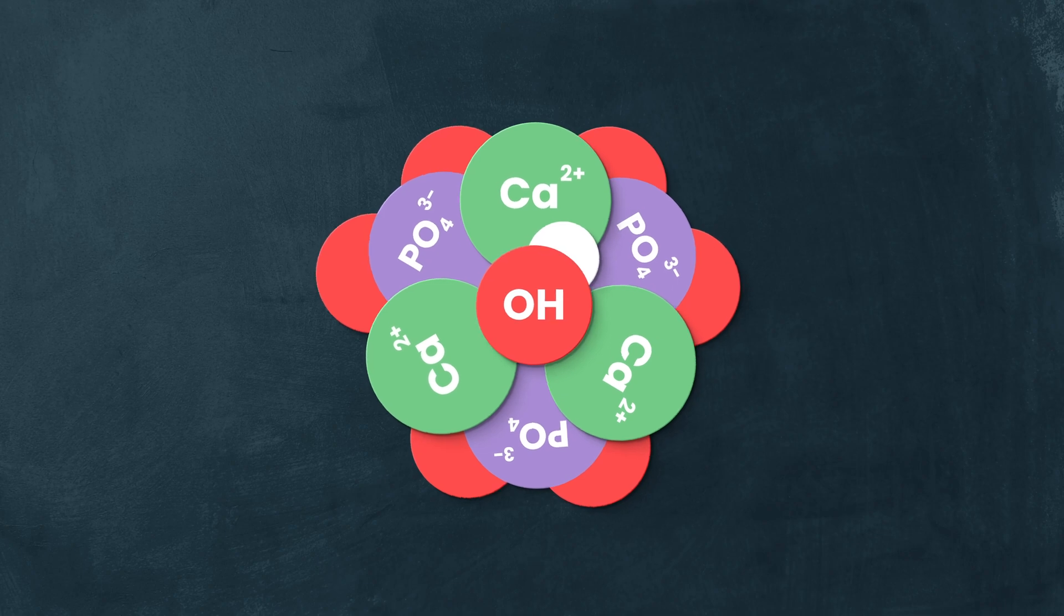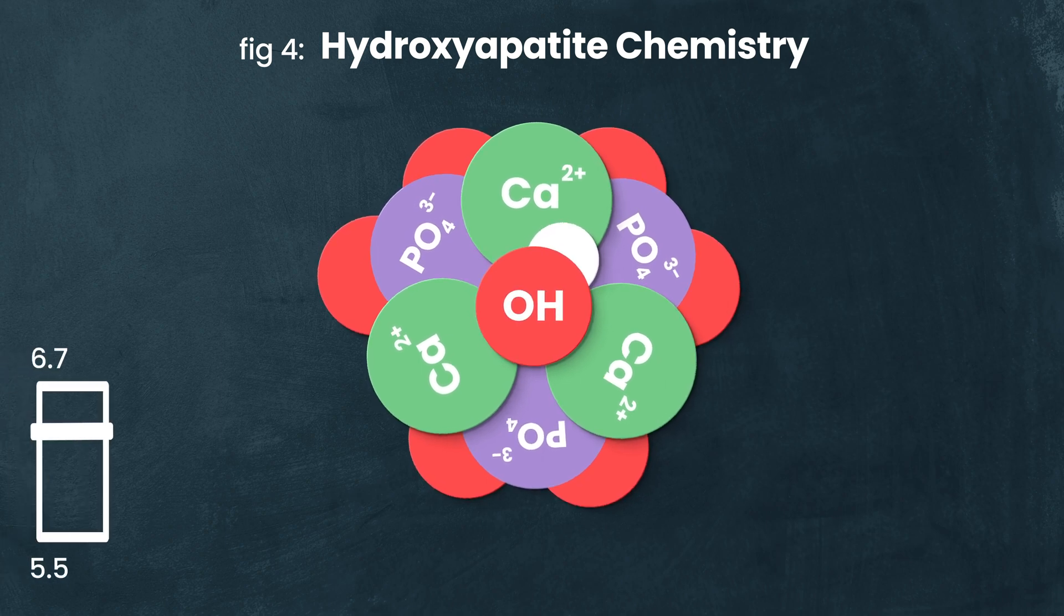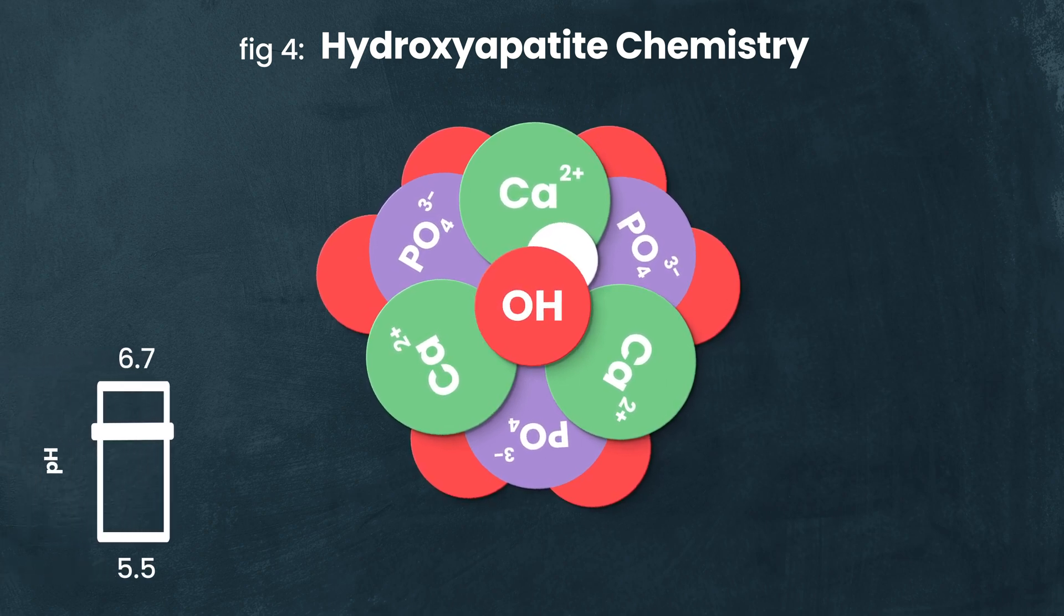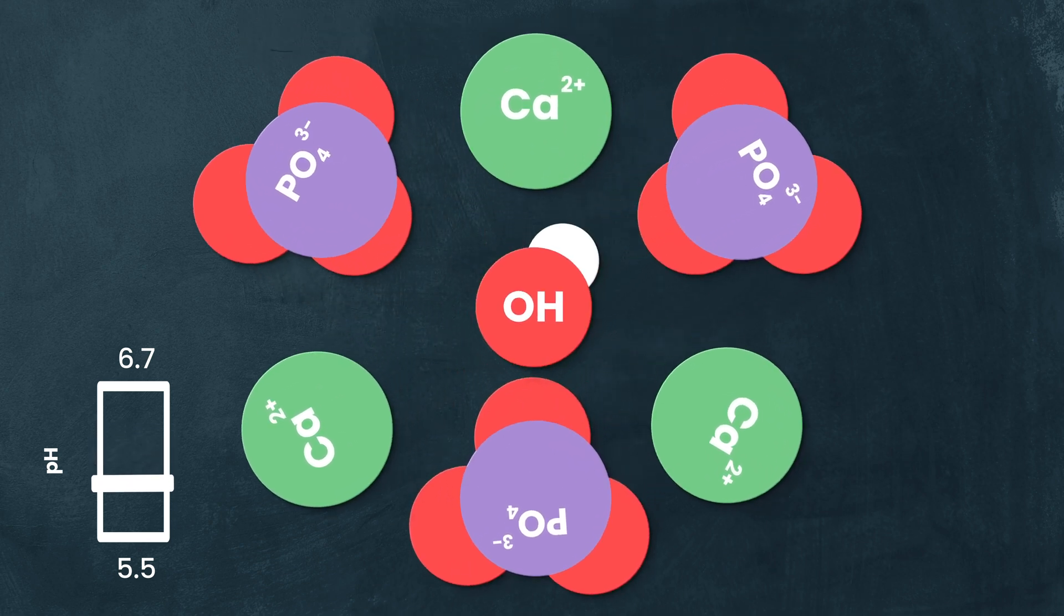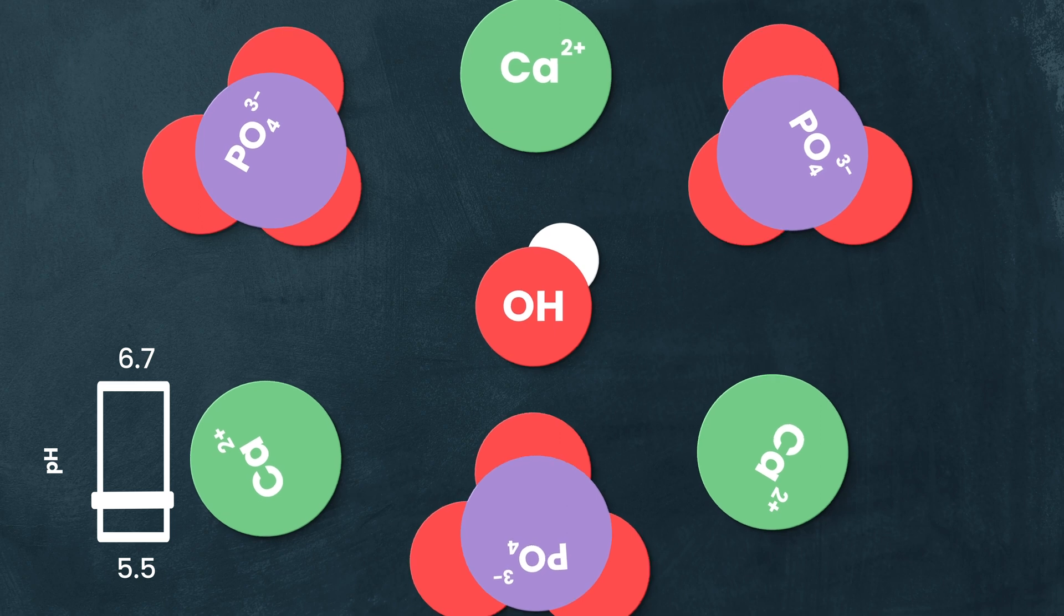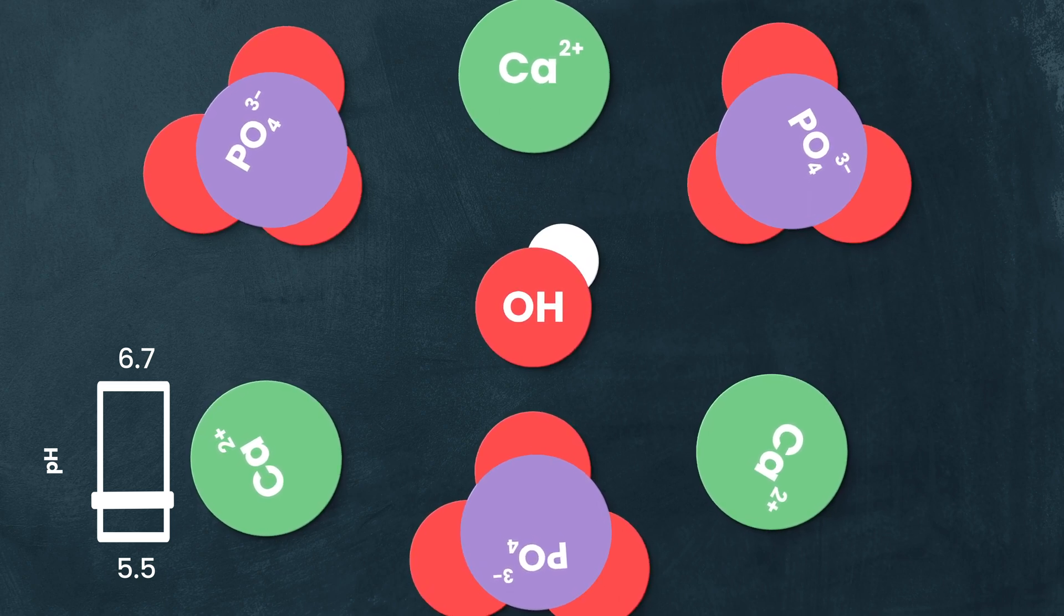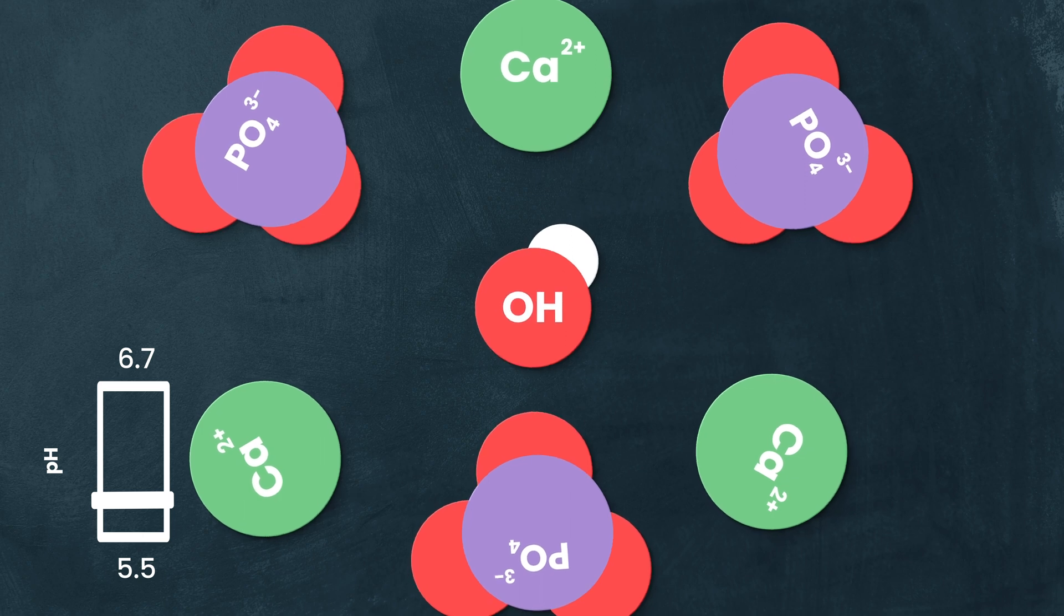Fun fact here, tooth enamel is actually the hardest mineral in your body. But hard doesn't instantly mean resilient. Because while hydroxyapatite is tough, it has one critical weakness. Well, actually a bunch of critical weaknesses, but let's go with the one major one for the purpose of this video. It dissolves in acid. Well, I mean, a lot of materials dissolve in acid, and therefore this barely qualifies as a real weakness. But given how much the pH of your saliva can shift, how it can move from acid to alkaline and back again throughout the scope of a normal day, it becomes a weakness over time.